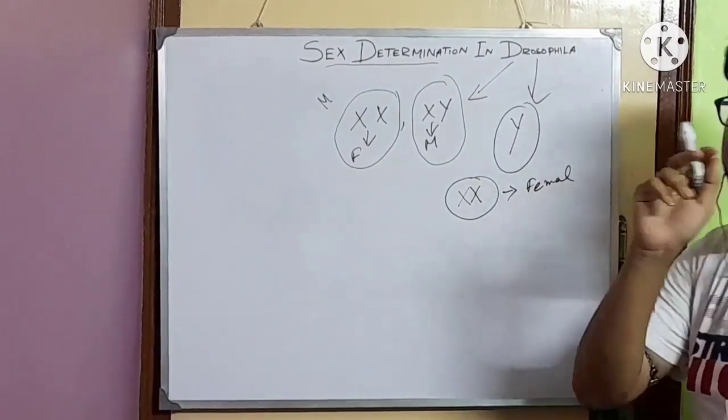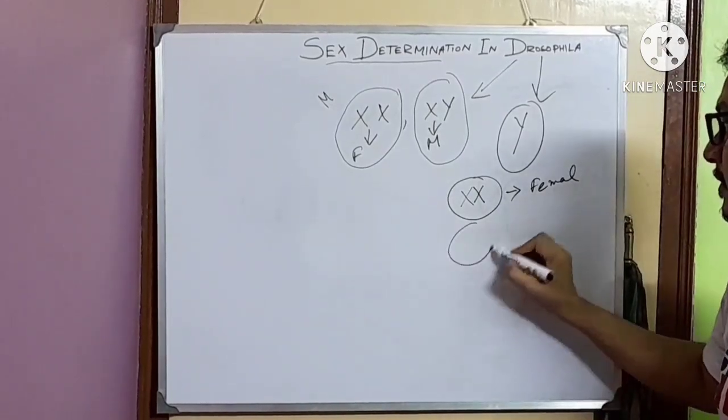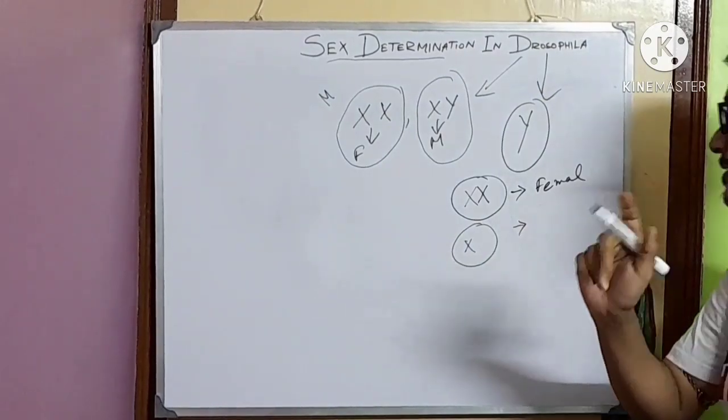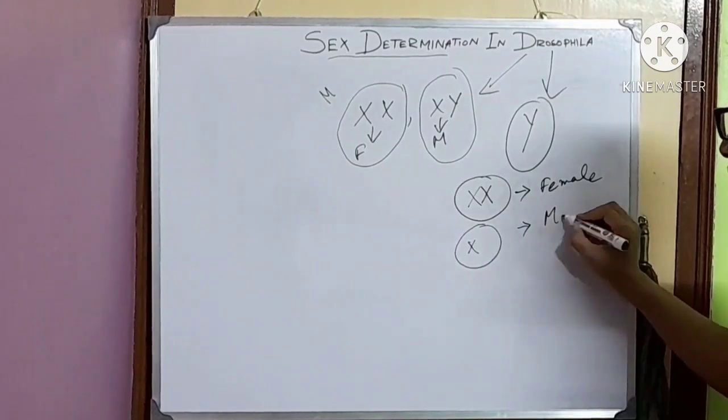And in other diploid cells, if one X chromosome is present, then that fly will be male.